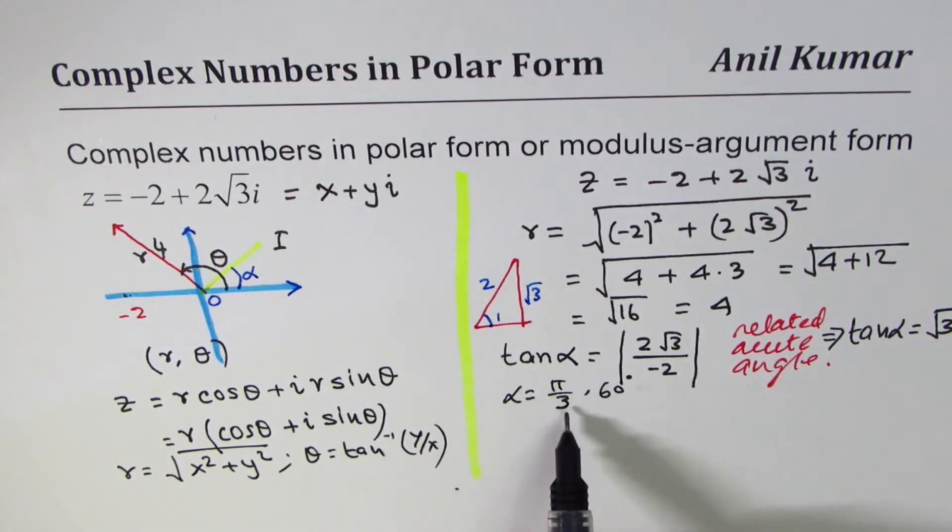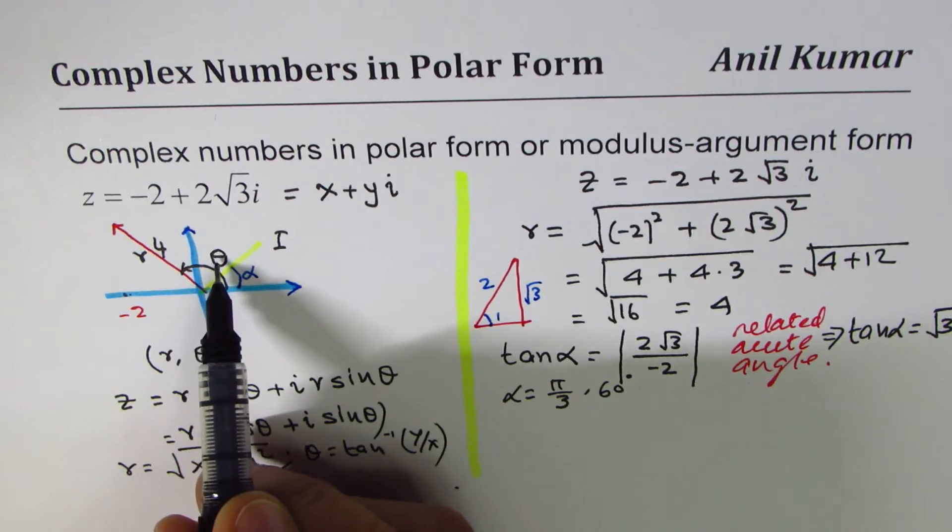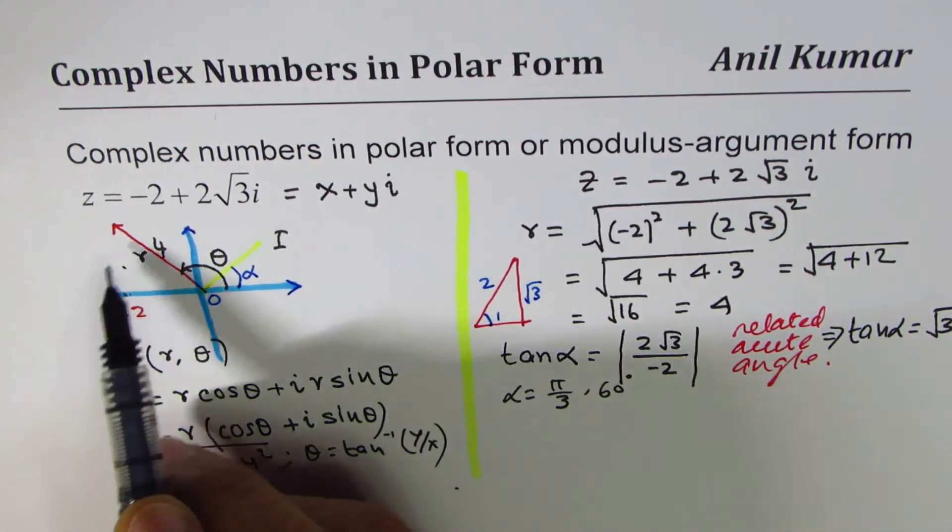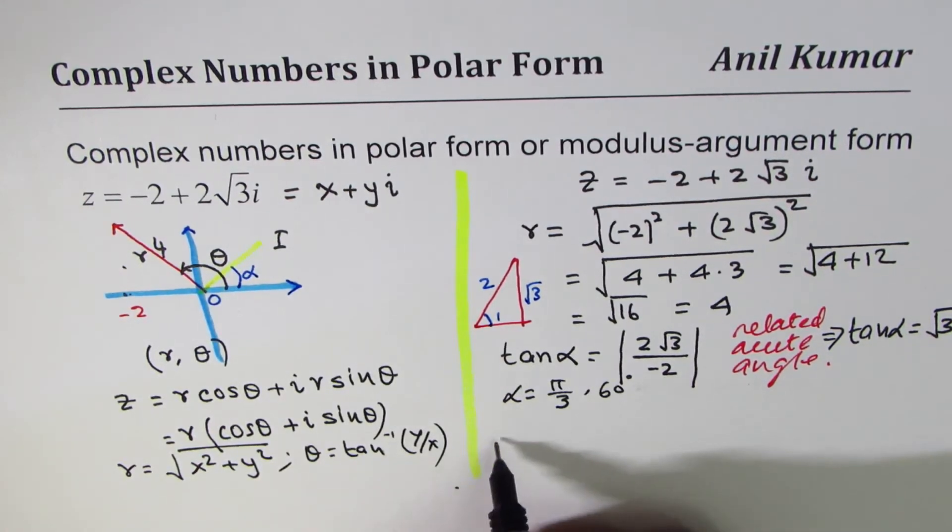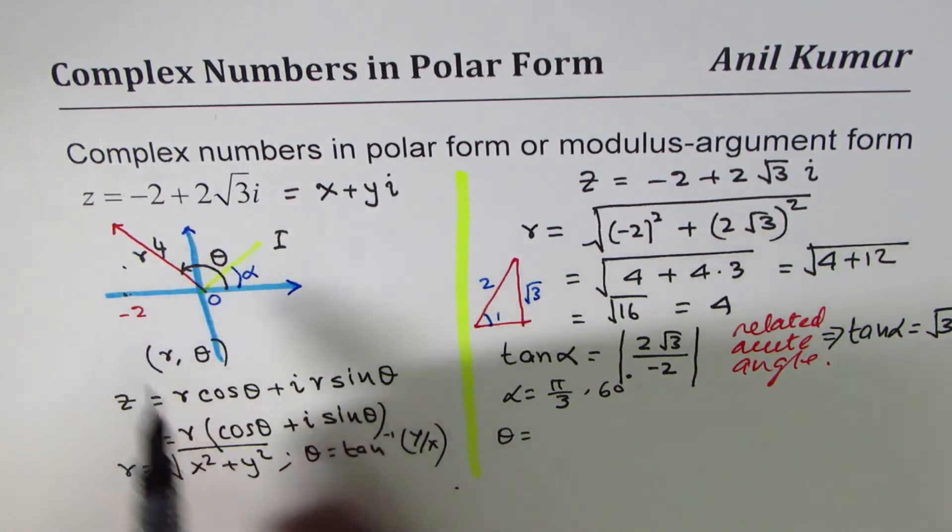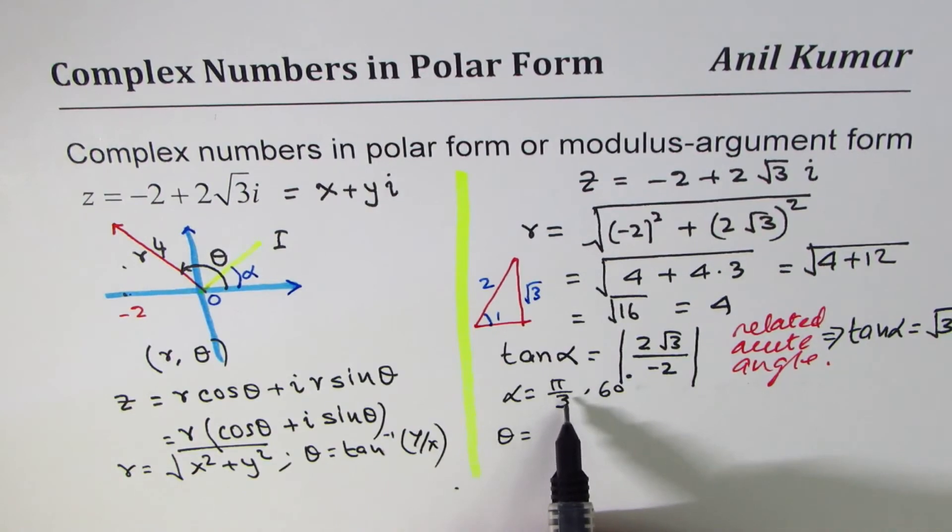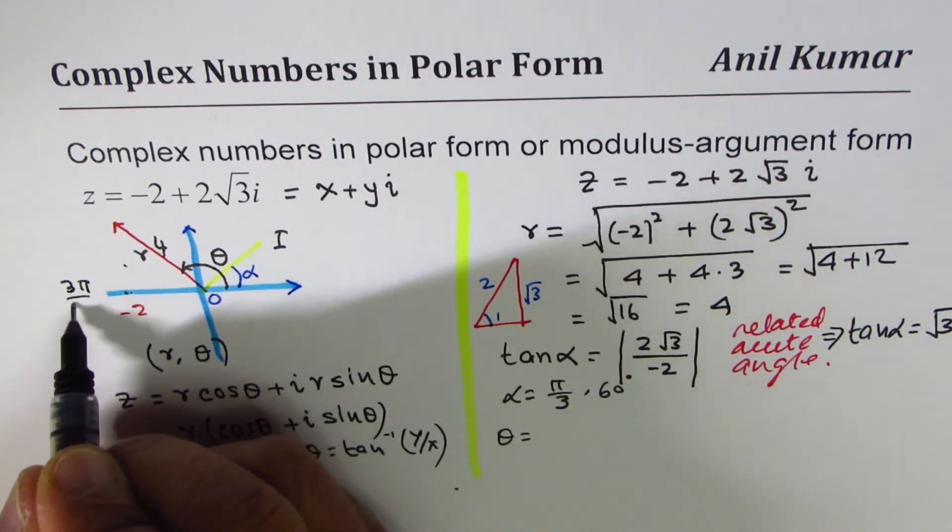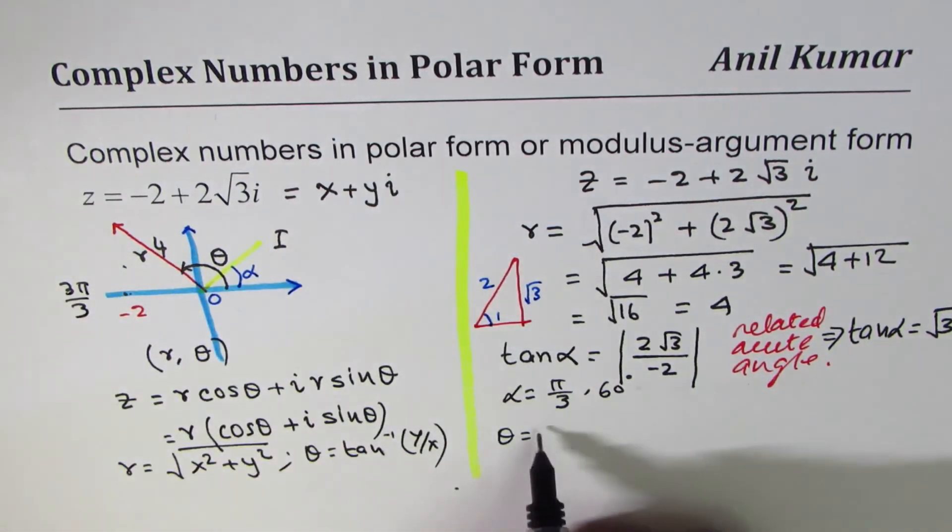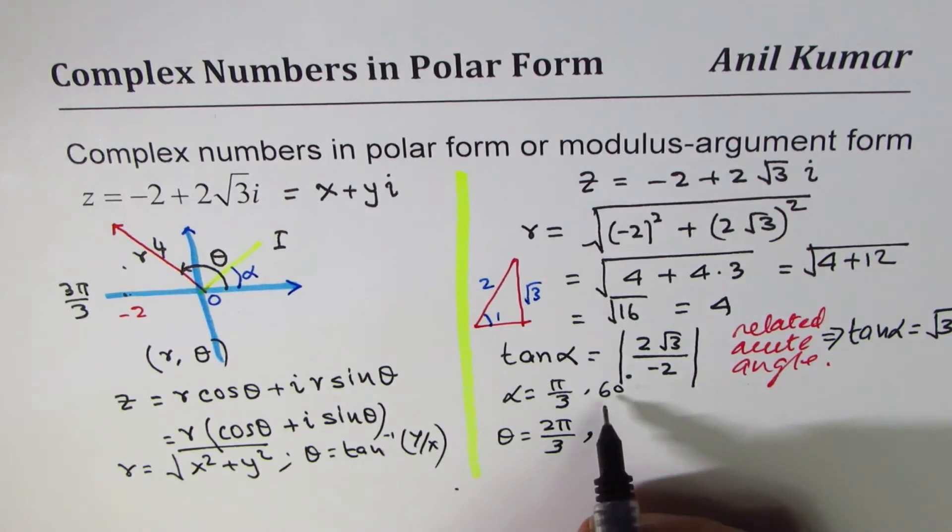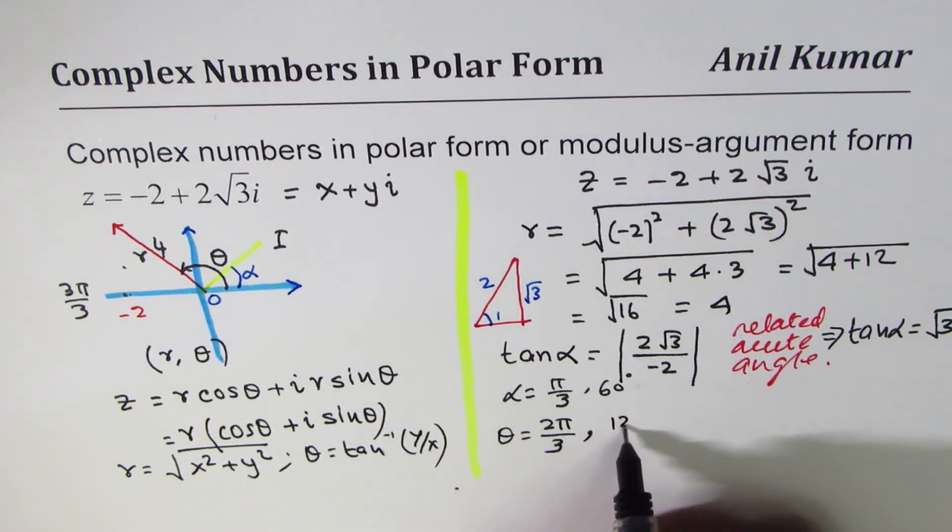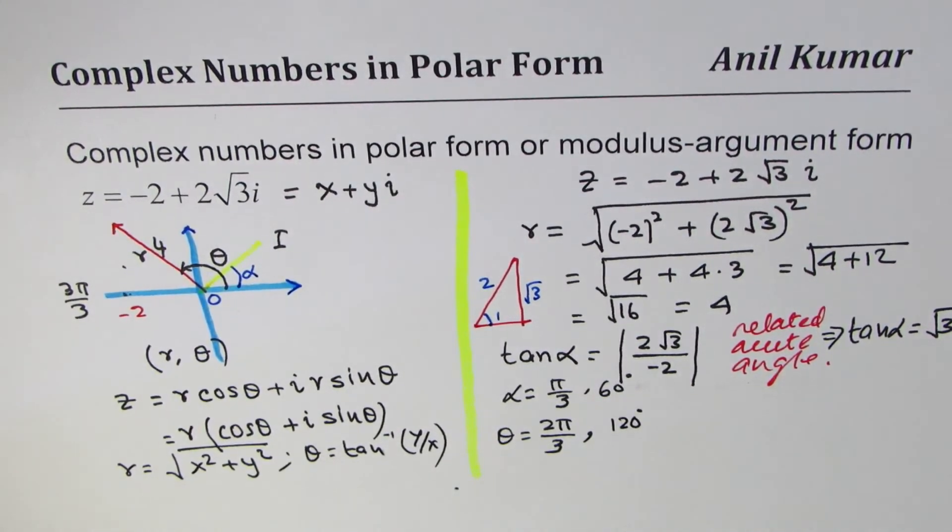If alpha is pi by 3, in our case, what should be theta? We are in quadrant 2. So 180 minus or pi minus. So theta equals, if I do pi minus pi by 3, so this is, you can say 3 pi by 3. Take away 1 pi, so we get 2 pi by 3. So that is how you get theta in radians. And in degrees, 180 minus 60 is 120 degrees. So we get theta.